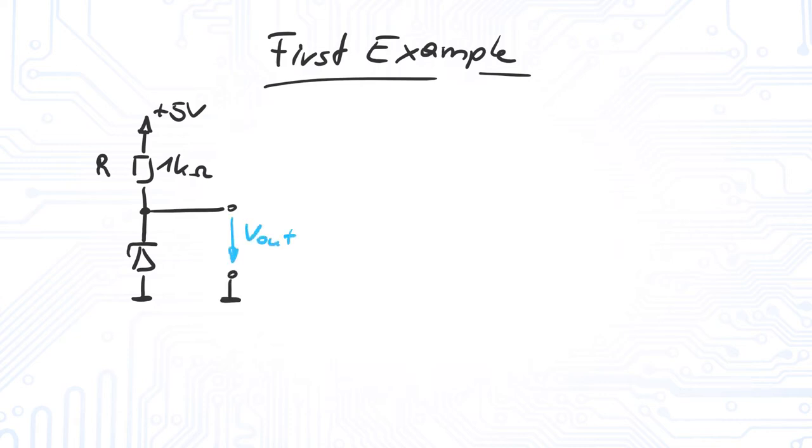So let's solve for our first example. We have a Zener diode in series with a resistor. We are interested in the output voltage and the current through the Zener diode in reverse direction. From the datasheet of the Zener diode, we know that the Zener voltage is 2 volts.